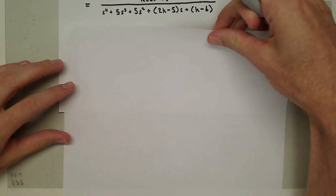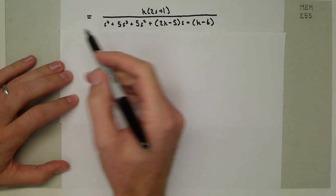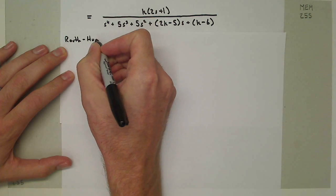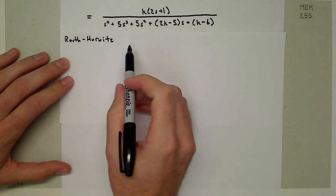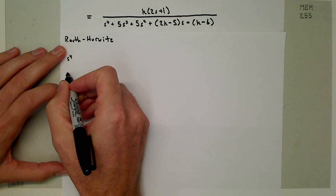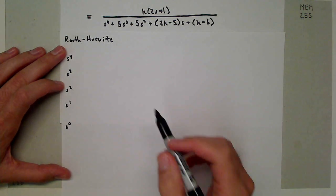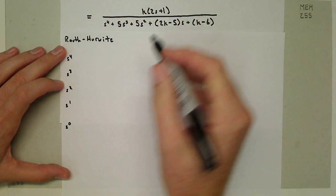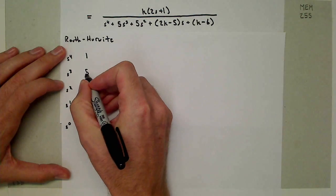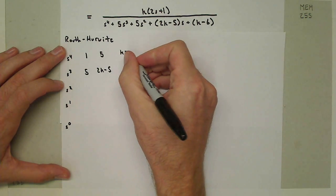I'm going to write down the terms of the denominator so I can form the Routh-Hurwitz table. The table is constructed like so: I put the coefficients on this side, so we have s^4, s^3, s^2, s^1, and s^0. In the columns I'm going to put the coefficients. The coefficients here are going to be 1, then 5, 5, 2K-5, K-6, 0.